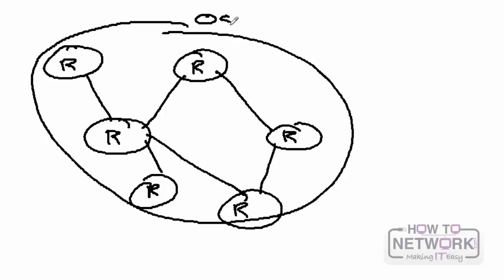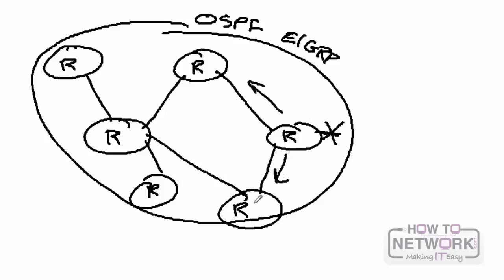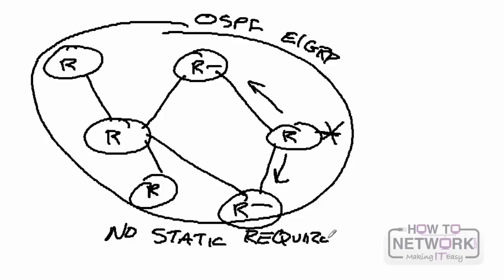All six routers can be part of a routing protocol such as OSPF or EIGRP, communicating layer 3 information back and forth. If an interface goes down on a router, that information is forwarded to its neighbors, who forward it to all their neighbors. The entire domain is quickly updated. If you have a routing protocol enrolled across your entire campus, no static routes should be required.